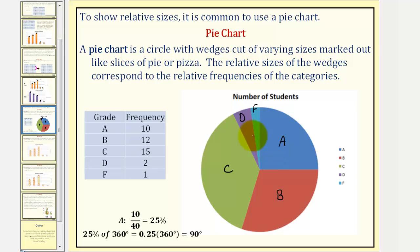But if we had to do this by hand, one circle represents 360 degrees. So one way to determine the size of each wedge would be to use a protractor, which measures angles, and because the total number of students is 40, the sum of the frequencies.